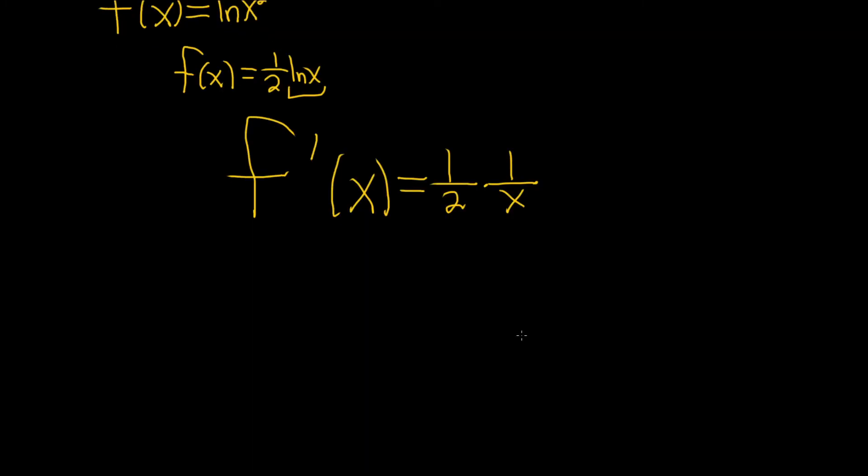And that's pretty much it. You can leave it like this. If you like, you can actually perform the multiplication here. Let's go ahead and do that. So 1 times 1 is 1. And then 2 times x is 2x. And that would be the derivative.